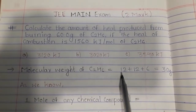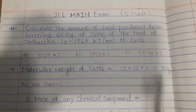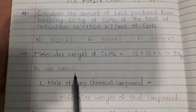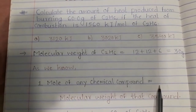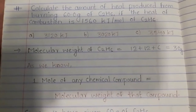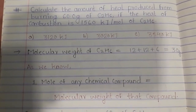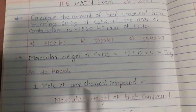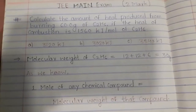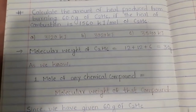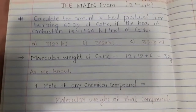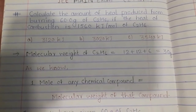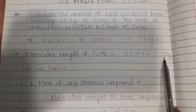For two carbon atoms we have 12 plus 12, and if we total this we get 30 grams. So the molecular weight of C2H6 is 30 grams. As we know, one mole of any chemical compound is always equivalent to the molecular weight of that compound. So if you are trying to convert the weight of any chemical compound into moles, you should remember that one mole equals the molecular weight.